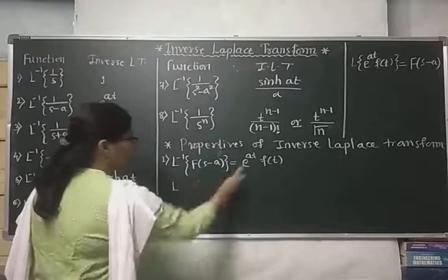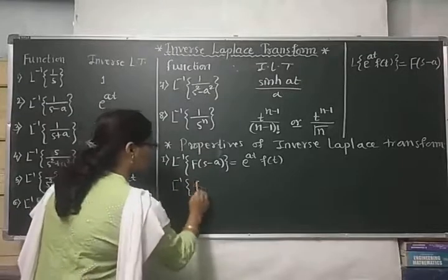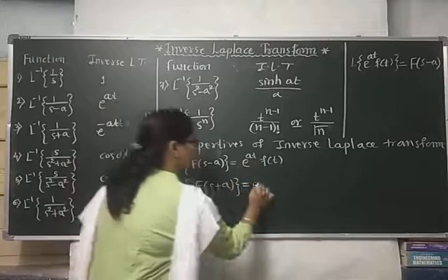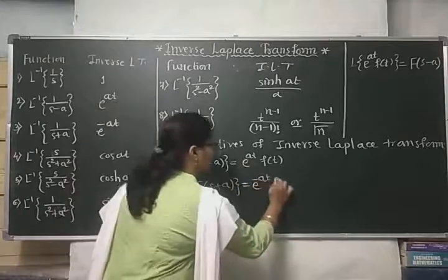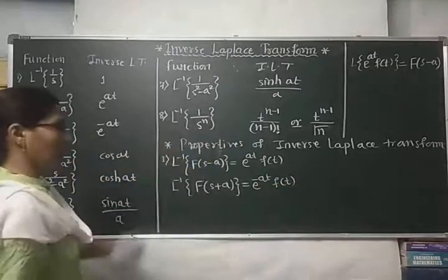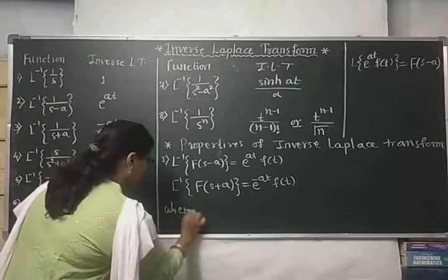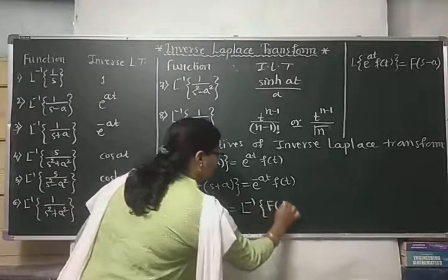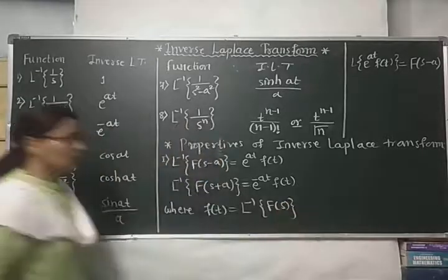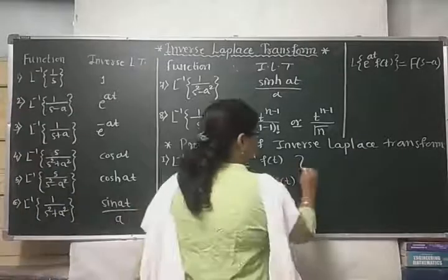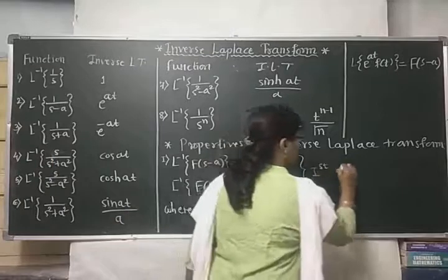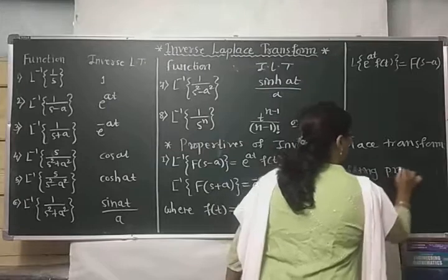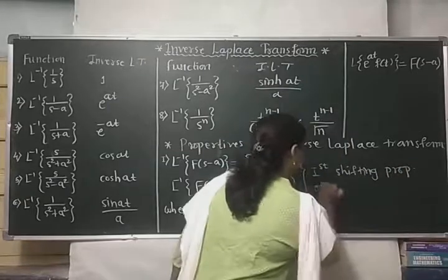In a similar way, if you have a function of (s+a), then the power becomes negative, giving e^(−at)·f(t). Here f(t) denotes the Laplace inverse of F(s). This completes the first shifting property of inverse Laplace transform.